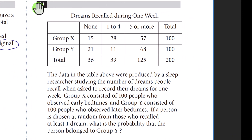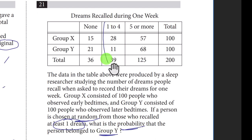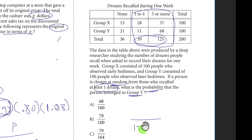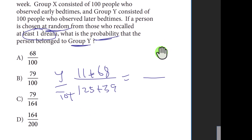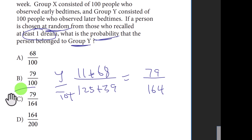Question twenty-one: probability that a randomly chosen person who had at least one dream came from group Y. Total people with at least one dream: 125 plus 39 equals 164. Group Y people: 11 plus 68 equals 79. Probability equals 79 over 164. The answer is C.